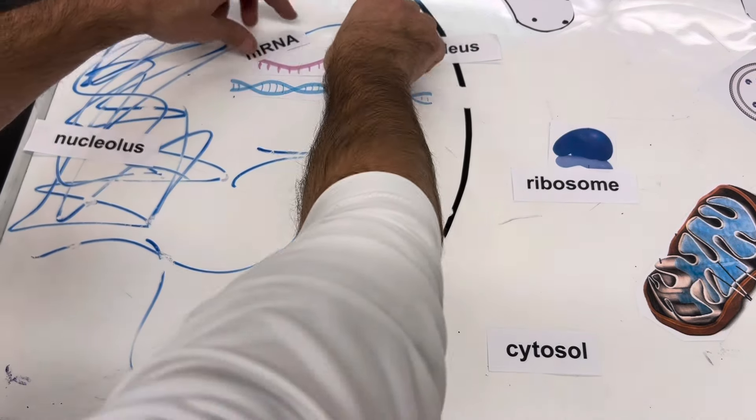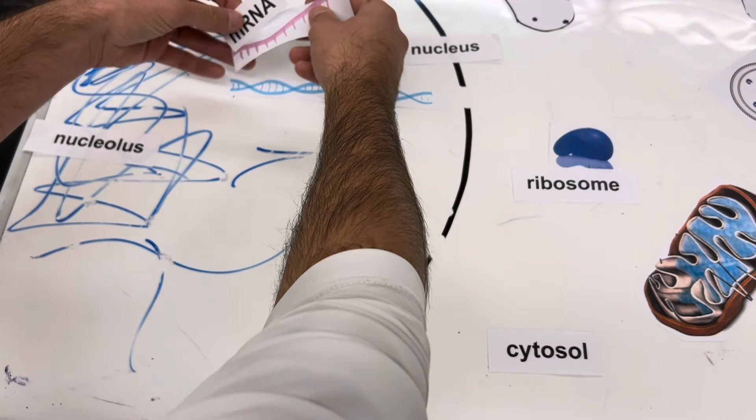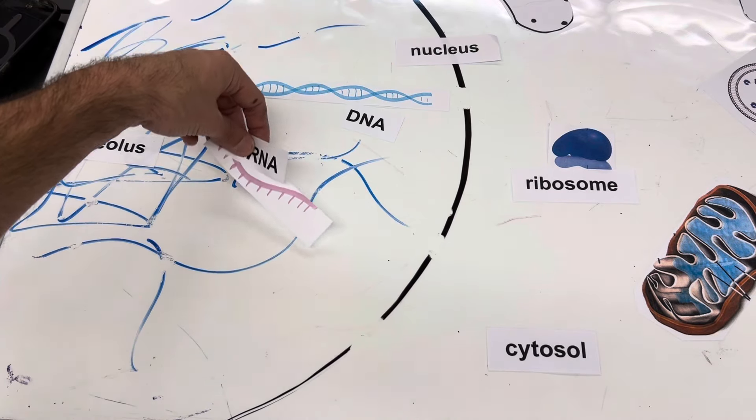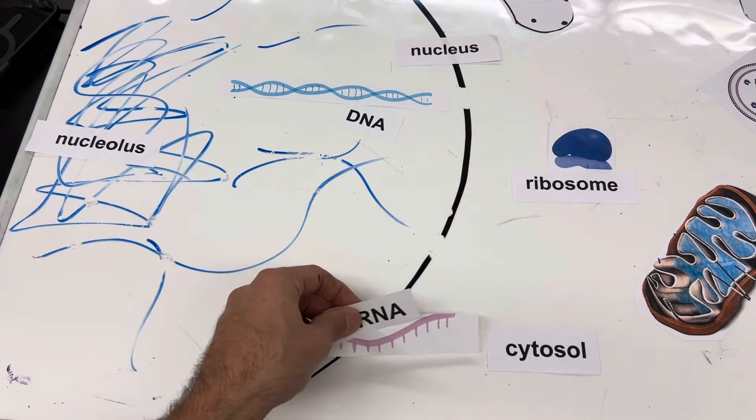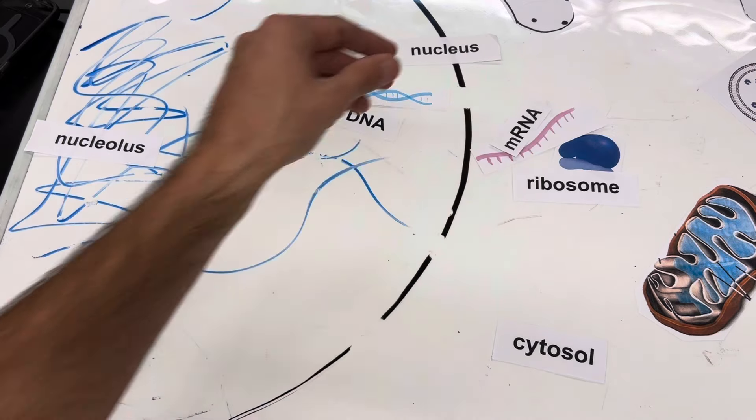So DNA stays in the nucleus. We have that copy of the DNA just to make hexokinase. That mRNA is going to come out of the nucleus, pass through the nuclear pore of the nuclear envelope, and then head to the ribosome.